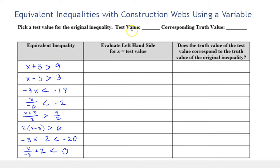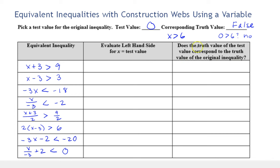My favorite test value is 0, because when you compute with 0 it's easy to add 0 and easy to multiply by 0. Our original inequality was x is greater than 6. Is 0 greater than 6? The answer is no, so the corresponding truth value is false. Now I'm going to evaluate the left-hand side of each inequality with a test value of 0 — it should give me all false inequalities, which would confirm the truth values correspond to the original inequality.